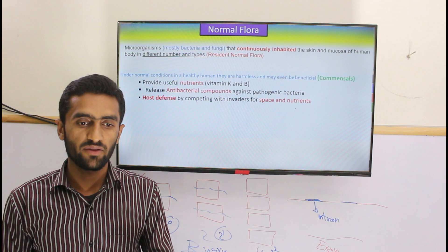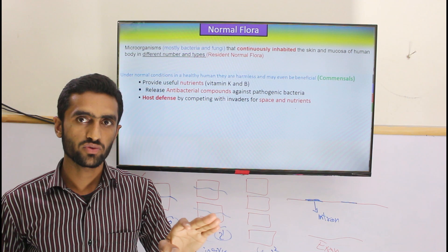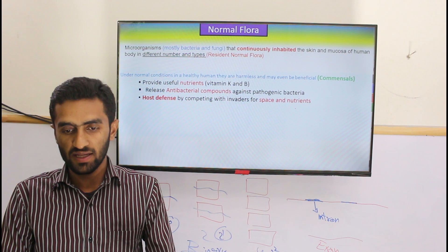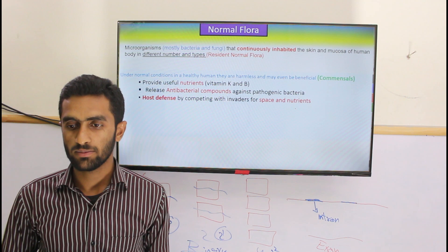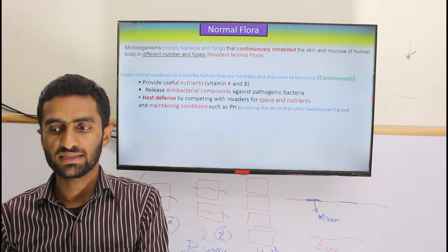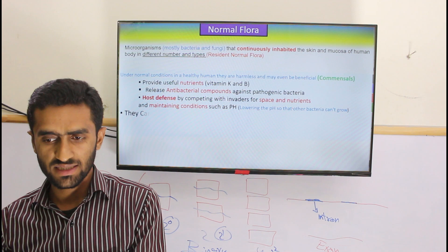Normal flora also protects the host by competing with invaders. For example, if 50 chairs in a classroom are already filled with 50 students, there is no room for newcomers. Similarly, if normal flora is sufficient in the body, there is less possibility for pathogenic bacteria to invade. They also help maintain pH — for example, in the vagina — which is highly beneficial.